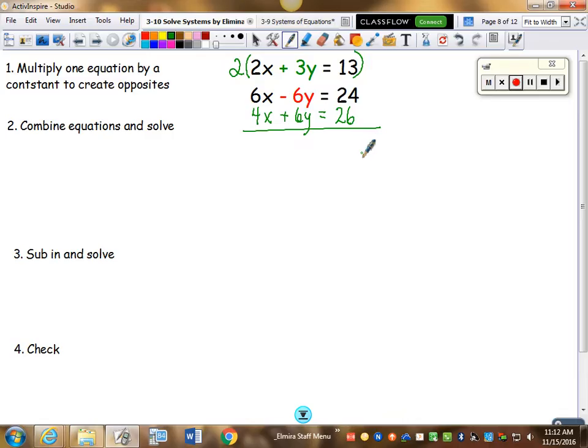Now I can cross out my 6y's and get 10x equaling 50. Divide by 10, x equals 5. And then from there forward, the rest of the problem really works the same way.